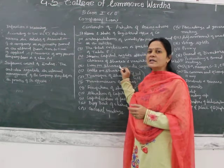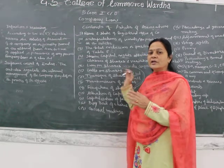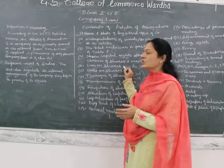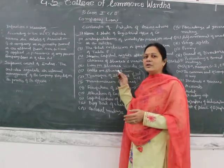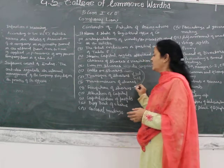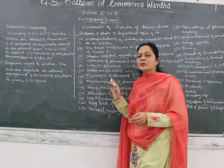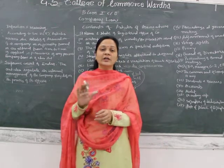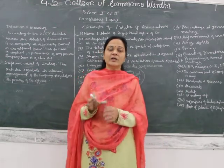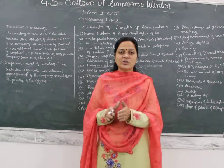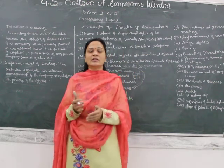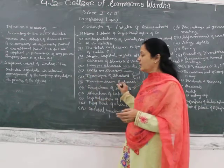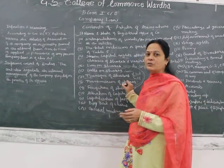If the shareholder has any dues towards the company and fails to pay them, then the company can exercise lien on shares — meaning the company can deny giving the shares to the shareholder. These shares may be fully paid or partly paid. But in the case of forfeiture of shares, the shares are not fully paid — they are partly paid. If the shareholder fails to pay the calls, that means the remaining calls on his shares, then only the company can exercise its right of forfeiture.